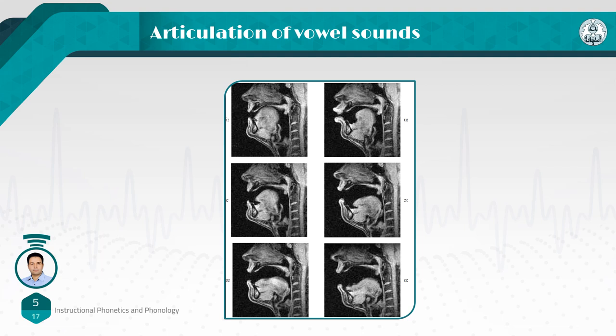Look at the shape of the lips when we produce 'u,' and also the position of the tongue. As you can see, for 'ee,' the tongue is in the front position. For 'u,' the tongue is in the back position. In the middle on the left, you can see the MRI image of a sound like 'e,' and on the right side in the middle, you can see 'o.' At the bottom on the left is 'a' — look at the position of the lips and the shape of the tongue. The tongue is lower than when you say 'ee.' In 'ee,' the tongue is higher, but when producing 'a,' the position of the tongue is lower.